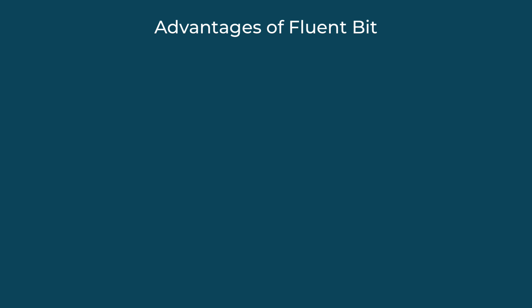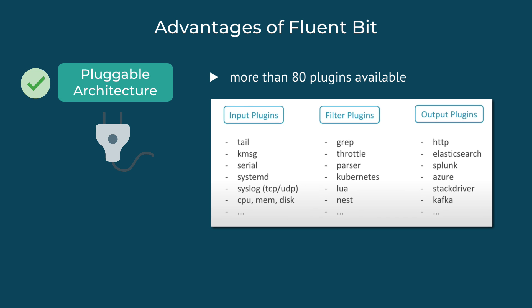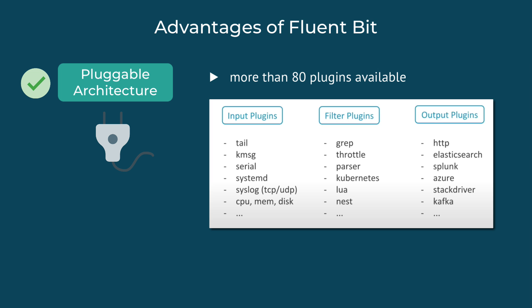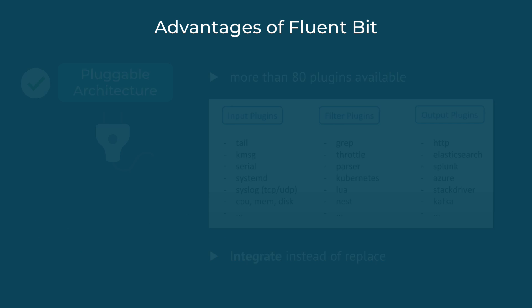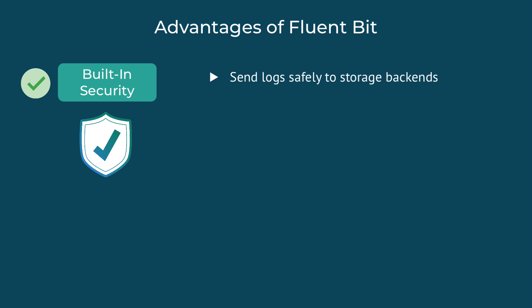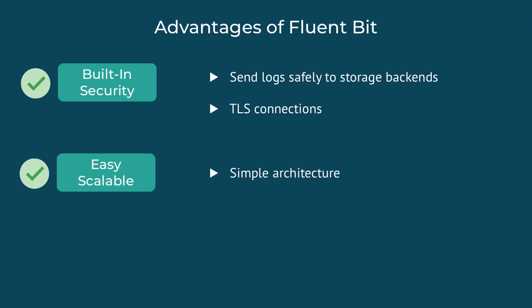Some other advantages of FluentBit are that it has a pluggable architecture. As a log collector, it doesn't try to replace data sources like Systemd or Journald; instead, the goal is to integrate with different data sources. FluentBit needs to be able to talk to TCP, read logs from a file system, talk to the Systemd API, etc. It also has built-in security — when sending logs out to storage backends, you don't want your logs sent in plain text, so you use HTTPS or TLS. And it has a simple architecture which makes it easy to scale FluentBit on hundreds of servers.